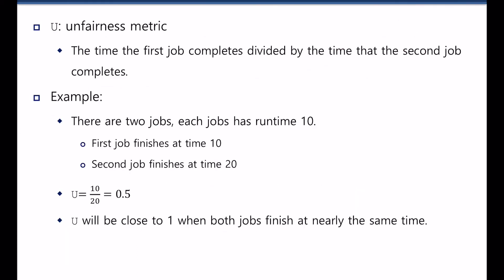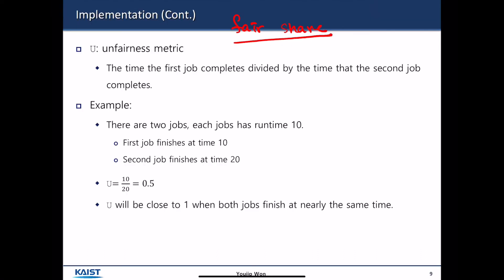There is a notion of unfairness metric. The objective of the CPU scheduling algorithm is to provide a predefined amount of fair share. If there are two jobs and the time the first job completes divided by the time the later complete job, the ratio between the two is called unfairness metric.